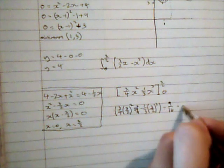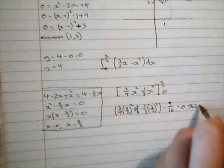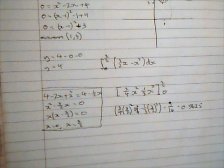And I get there 9 over 16, or as a decimal that was 0.5625. And that represents the area I was looking for.